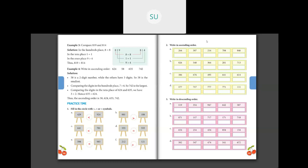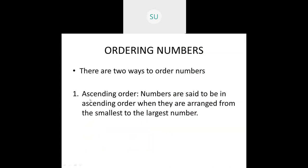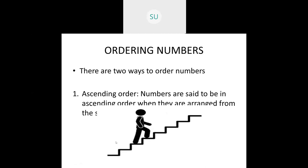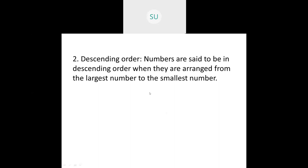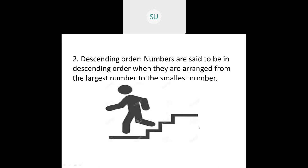Now ascending and descending order. There are two ways to order numbers. Ascending order is when numbers are arranged from the smallest to the largest — like climbing up the stairs from a lower level to a higher level. Descending order is when numbers are arranged from the largest to the smallest — like climbing down the stairs from a higher level to a lower level.